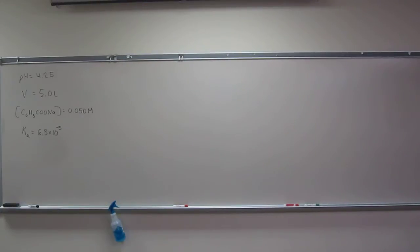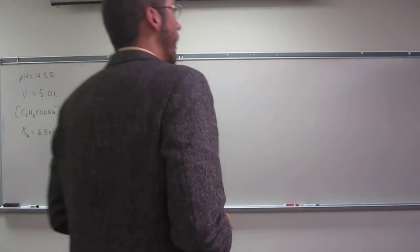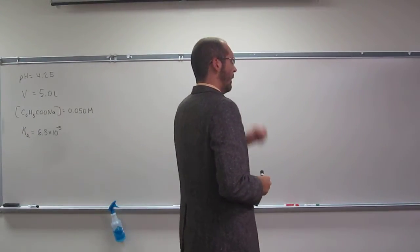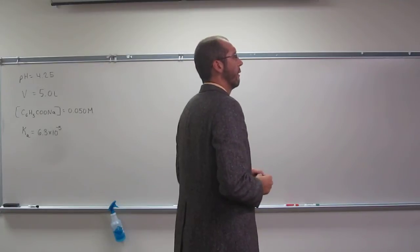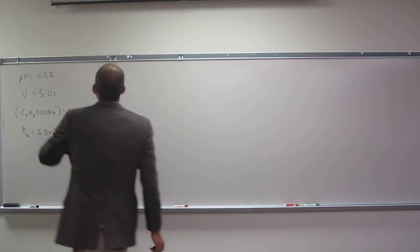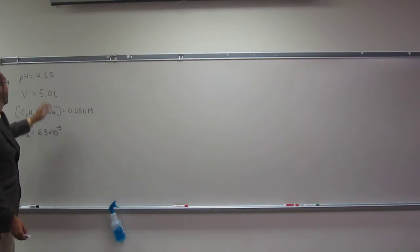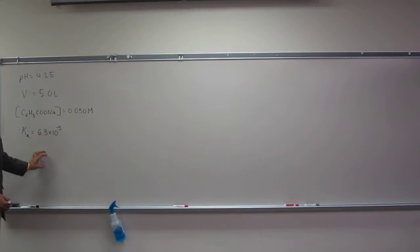So let's try to do this problem, preparing a buffer. How would you prepare a benzoic acid, sodium benzoate buffer with pH equals 4.25, starting with 5 liters of 0.050 molar sodium benzoate solution and adding the acidic component. And it gives you the Ka for benzoic acid, which is 6.3 times 10 to the negative 5.